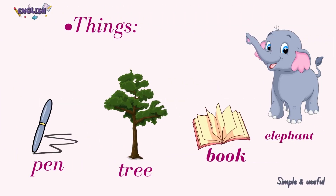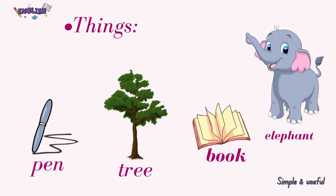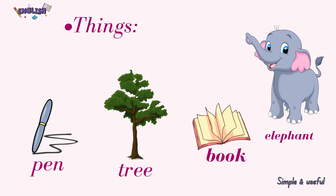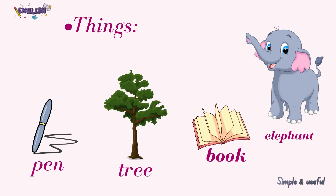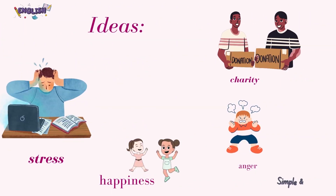Things: Pen, Table, Tree, Apple, Book, Elephant, or Cat. Ideas: Patience, Stress, Happiness, Bravery, Secrecy, Anger, Honesty, or Charity.